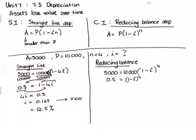Right. How do I get rid of to the 4th power? I do the 4th root. Then I've just got 1 minus I here.